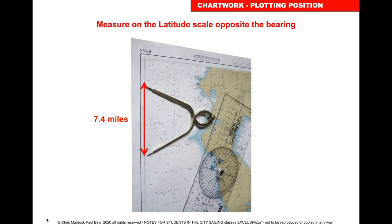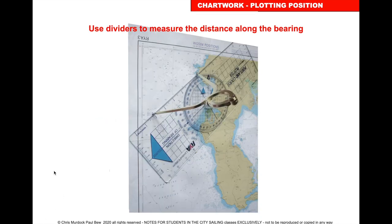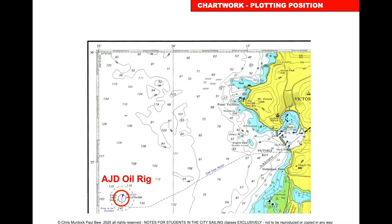We need to measure 7.4 miles. Always measure from the side of the chart — count 7 miles and then 0.4 at the end. Take your dividers set to 7.4 miles to the lighthouse and mark off that distance along your bearing line. You can either leave the plotter on or draw the line and measure from it — that point will be your position.